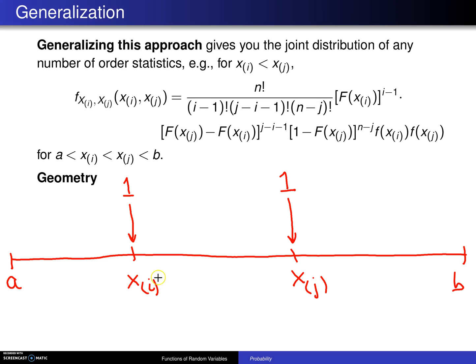If this is the i-th order statistic, then we must have i minus 1 observations falling here. If this is x sub j, then we must have n minus j observations falling here.